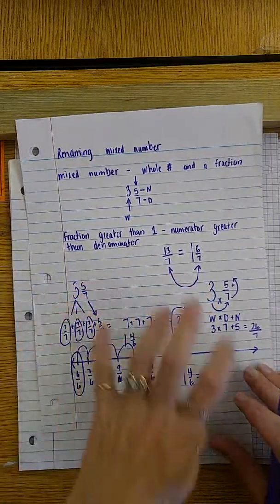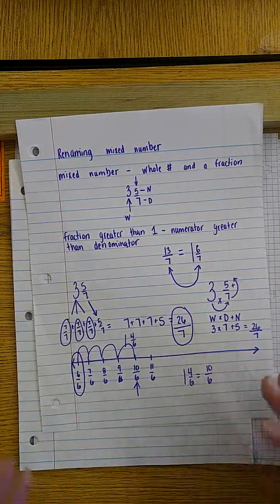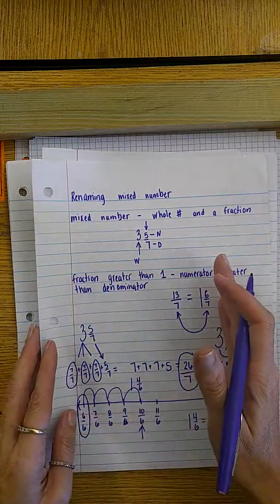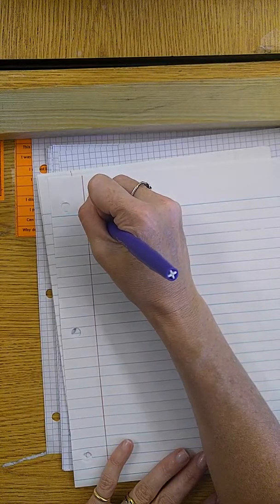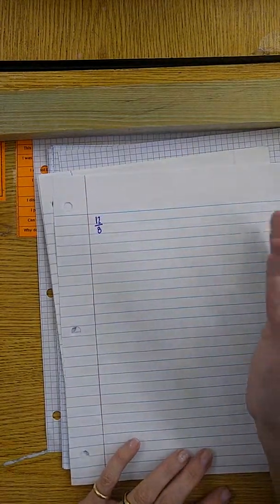Now the children have a choice of what strategy they want to use. They're not limited to, they don't have to use one in particular. They just have to master the renaming process. Now that was for renaming from a mixed number to a fraction greater than one. Now we have to go to the other direction. We have to rename from a fraction greater than one. Let's say twelve eighths. And we need to turn that into a mixed number.